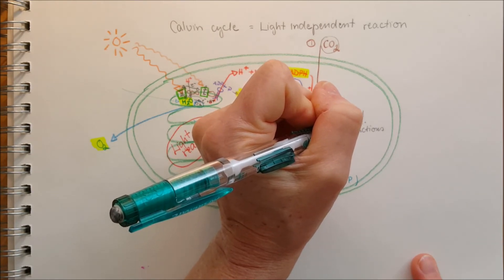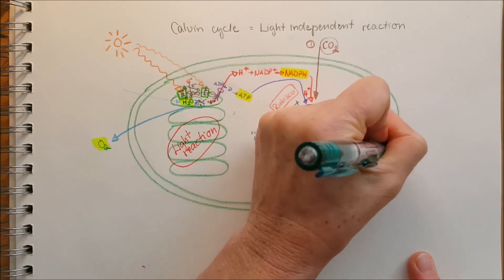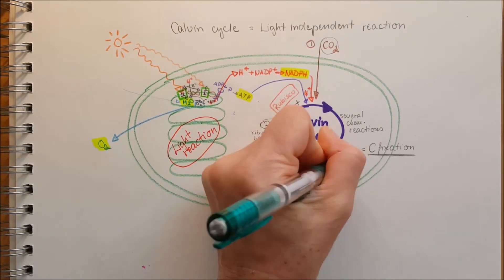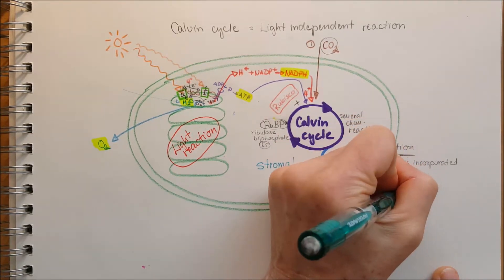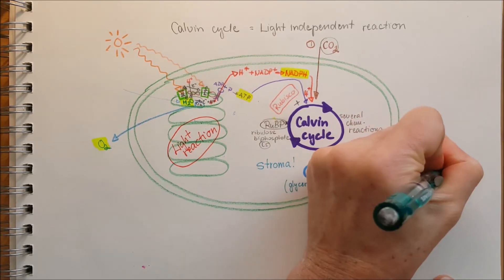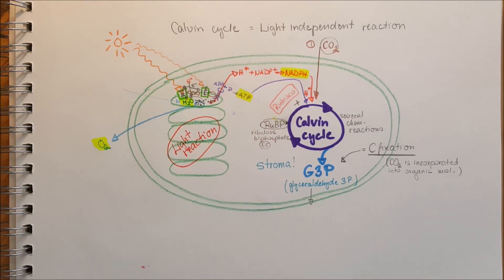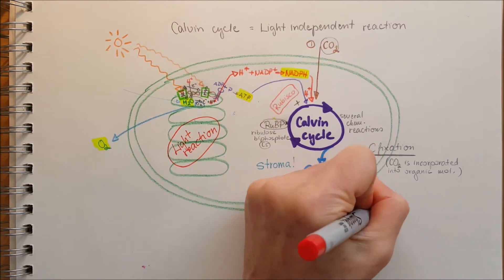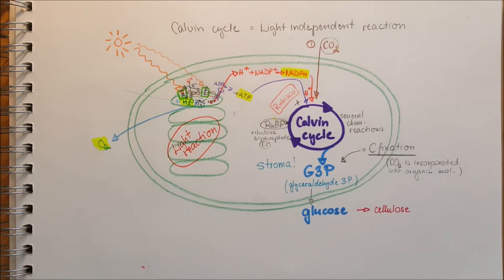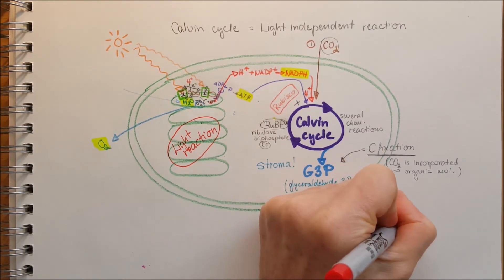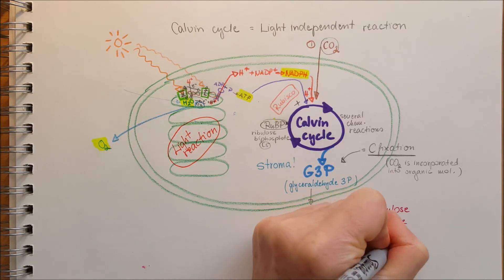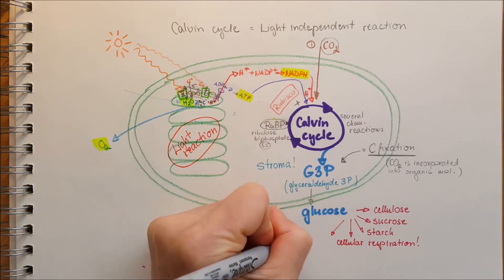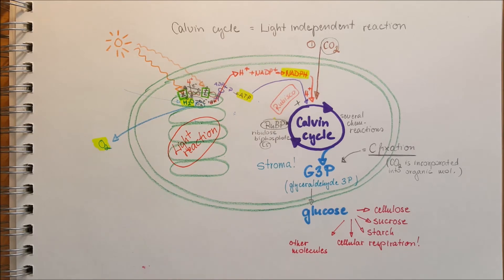Carbon fixation occurred as carbon was added to the ribulose bisphosphate, converting inorganic carbon dioxide into an organic molecule. From glyceraldehyde-3-phosphate, glucose can form, and from glucose, cellulose, sucrose, and starch will form. Glucose also serves as the starting material for cellular respiration, as well as for other organic molecules.